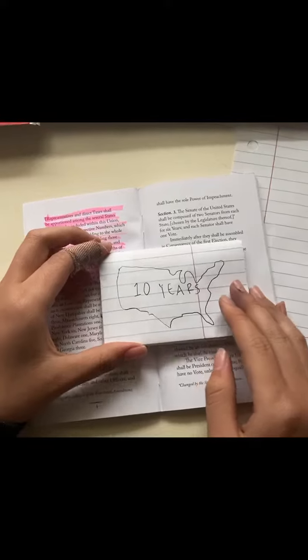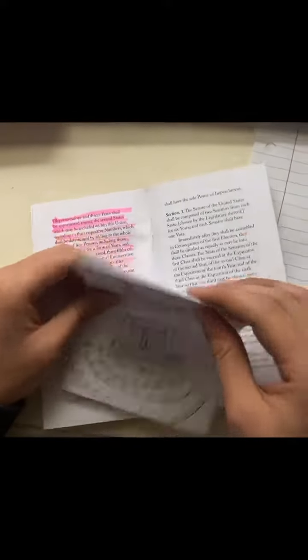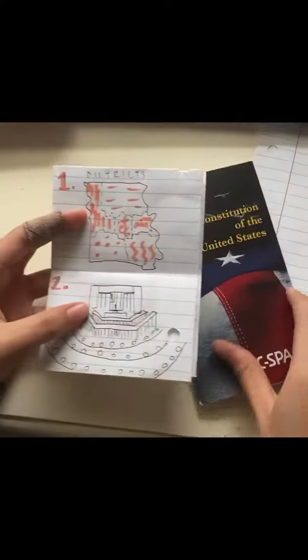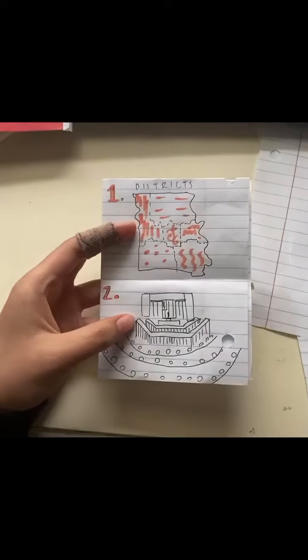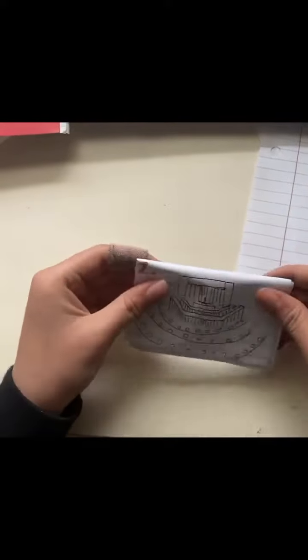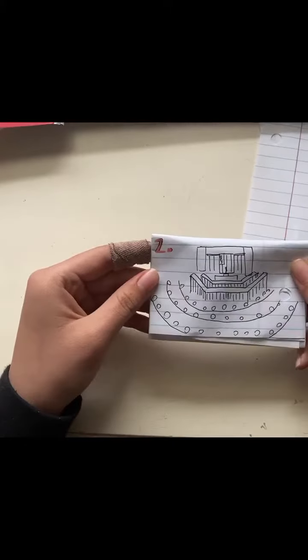And that number is used to determine a bunch of stuff. First, districts. That determines who you vote for in elections for representatives. And secondly, reapportioning seats in the House of Representatives.